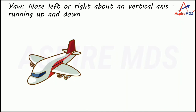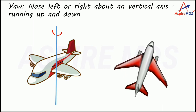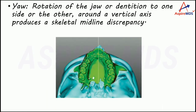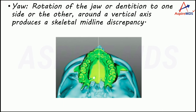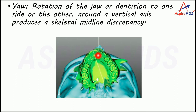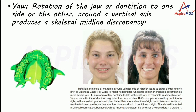The next rotation is yaw. Yaw is the rotation that takes place around the vertical axis, causing the nose of the plane to move either right or left — visible when viewed from the top, which clinically corresponds to the axial view. In the skull, if the maxilla has yaw — rotation to the right or left — the midline of the dentition will get shifted. So with yaw, the midline gets shifted.